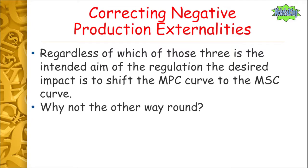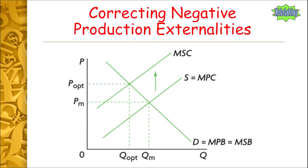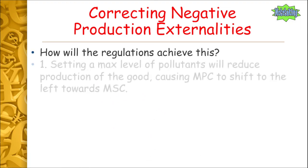Why are we moving the marginal private cost curve up to the social cost curve? Why not the other way around? The simple reason is that we want to reach the point of P-opt and Q-opt — we want to move away from PM and QM. So we shift the MPC curve up to the MSC curve to get to our point of P-opt and Q-opt. That's why we move it that way and not the other way around.